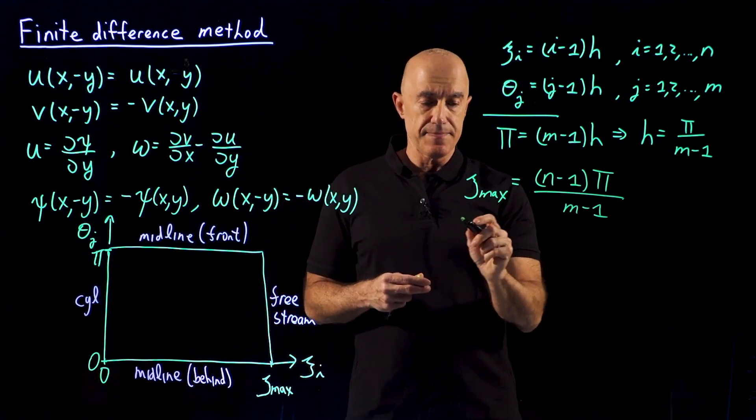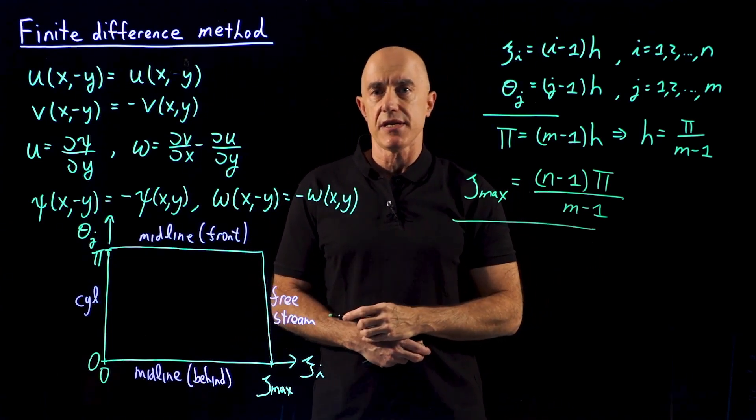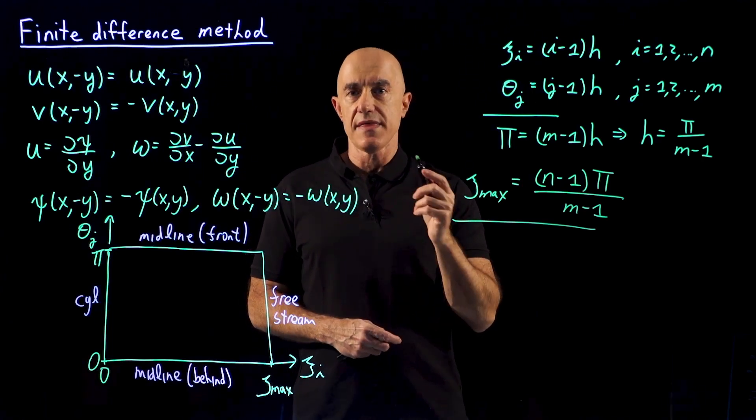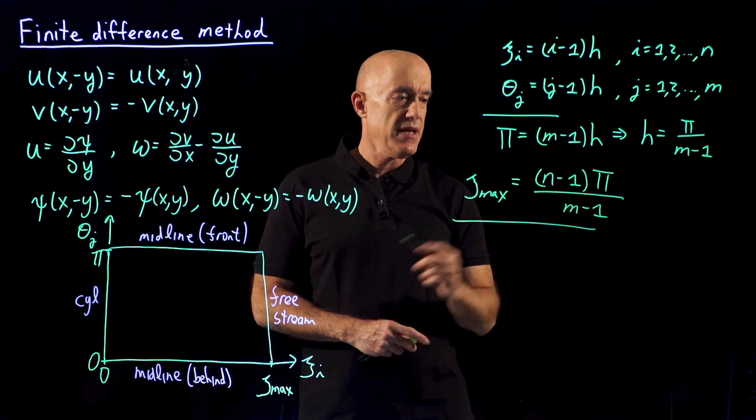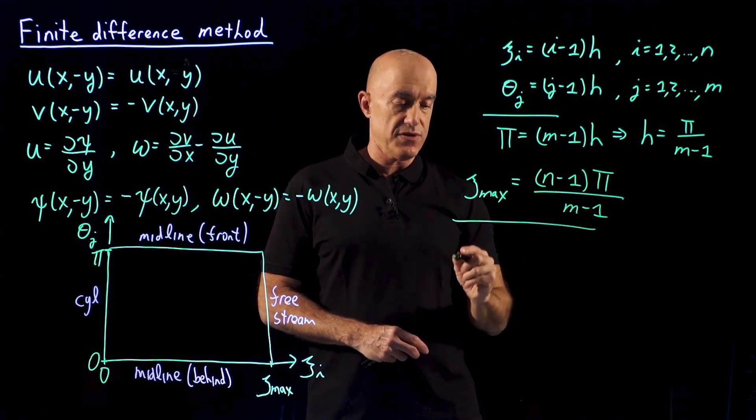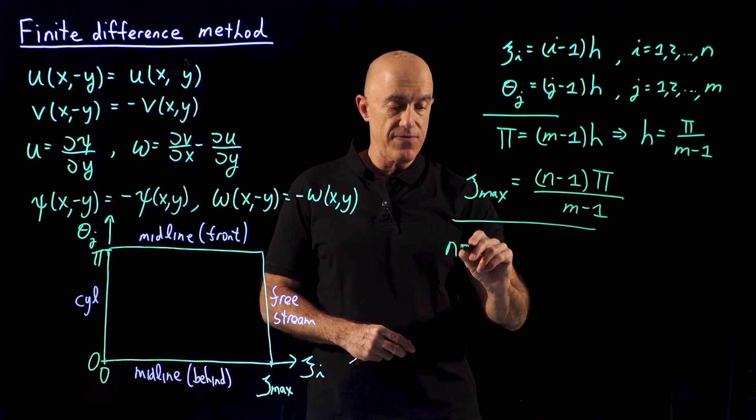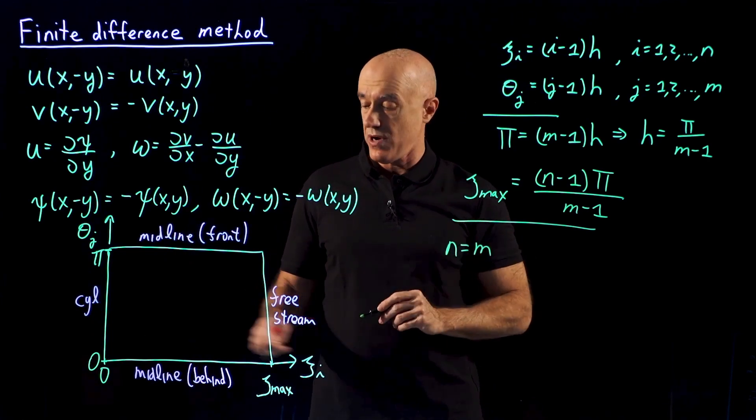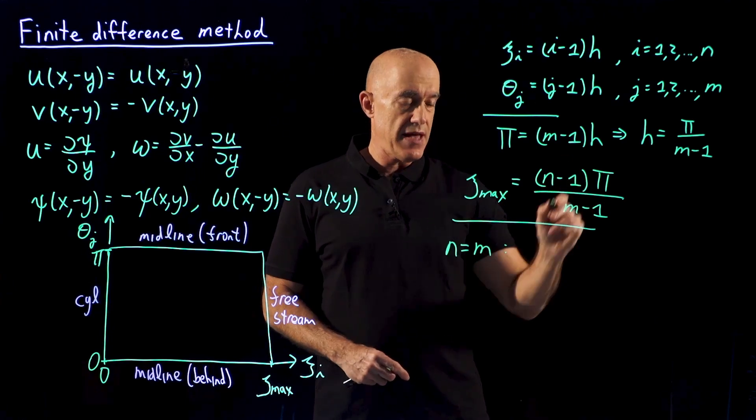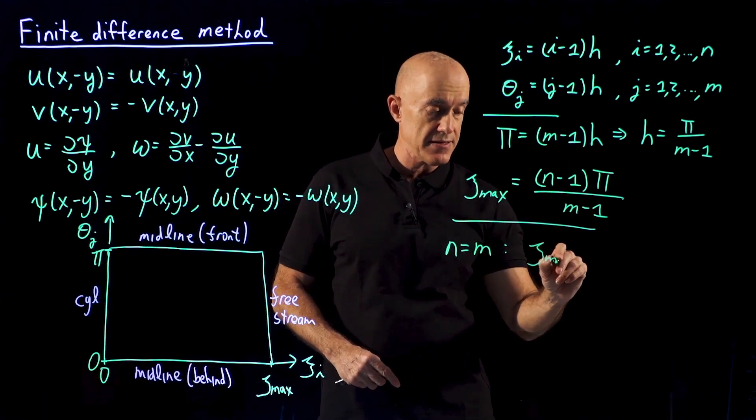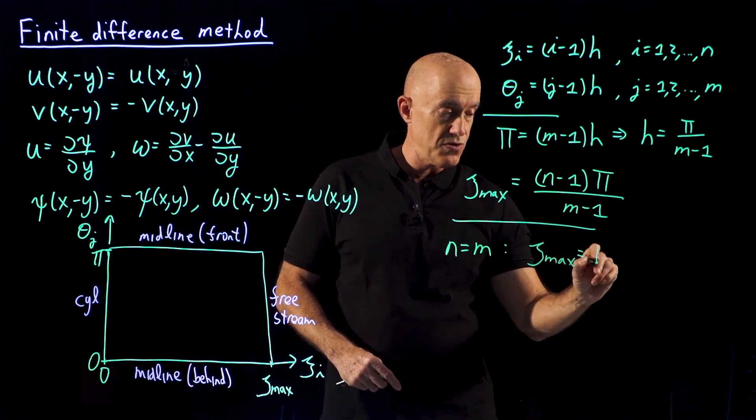The typical simulation that you will do, at least the one that I asked you to do for your assessment, is to choose n equals 2m. So if we take the same number of grid points in the ξ direction as in the θ direction, then we get ξ_max equals π.